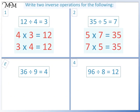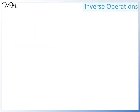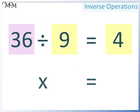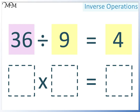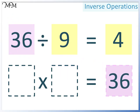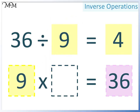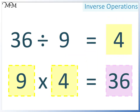Question 3: 36 divided by 9 equals 4. Two smaller numbers multiply together to make a larger number, so 36 must go here. Either of the two smaller numbers can go here — this time we'll have 9. And so 4 must go here. 9 times 4 equals 36.